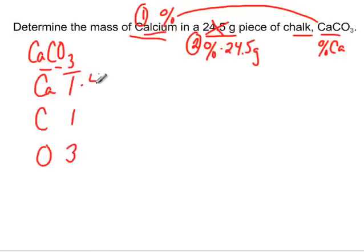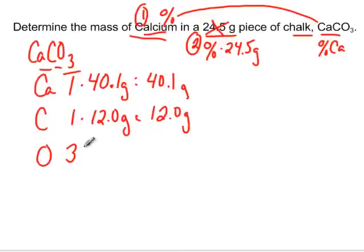Calcium, if we look on the periodic table, has a molar mass of 40.1 grams, so 40.1 times 1 is still 40.1. Carbon, if we look on the periodic table, has a molar mass of 12 grams. 1 times 12 is still 12. And if we look at oxygen on the periodic table, it's 16 grams. 3 times 16 is 48 grams.